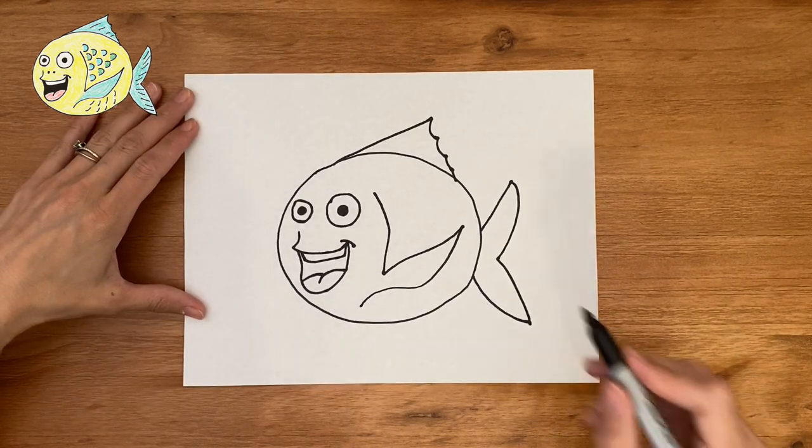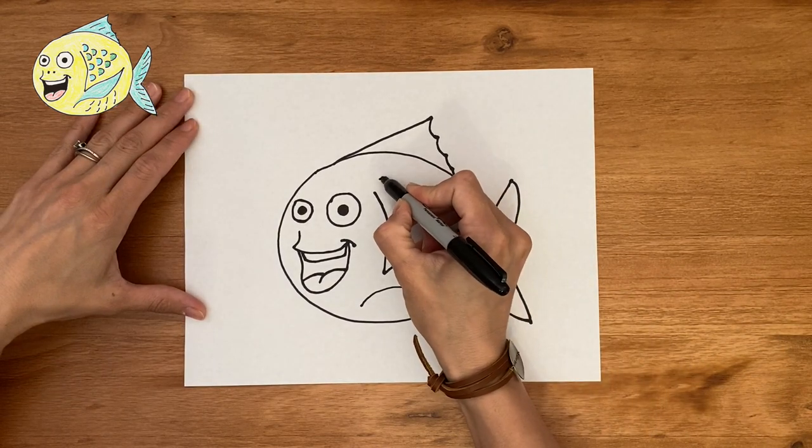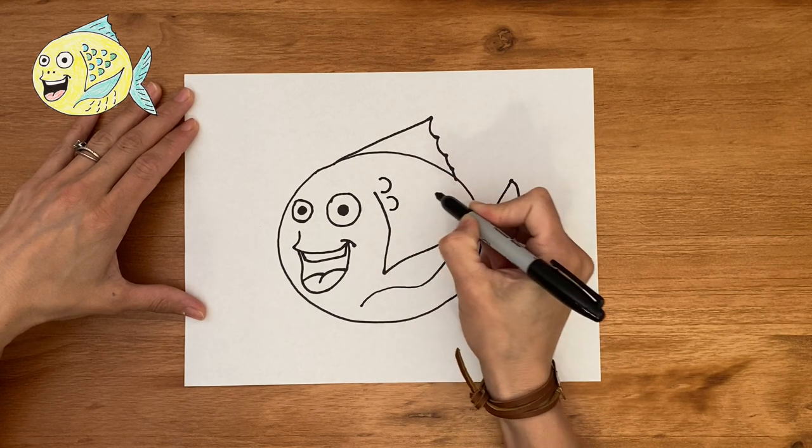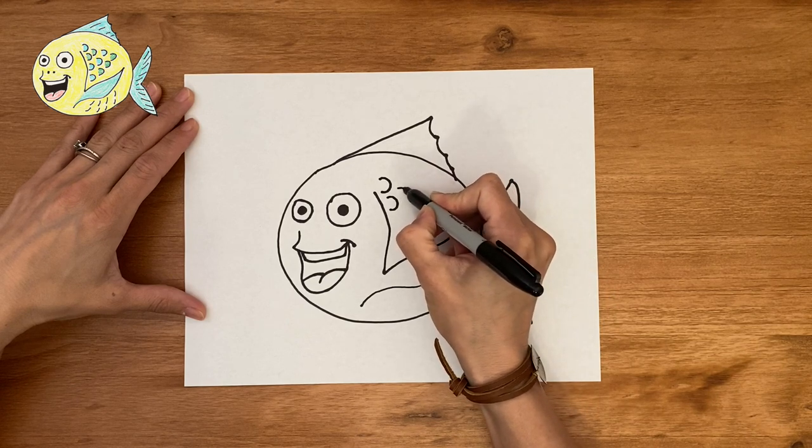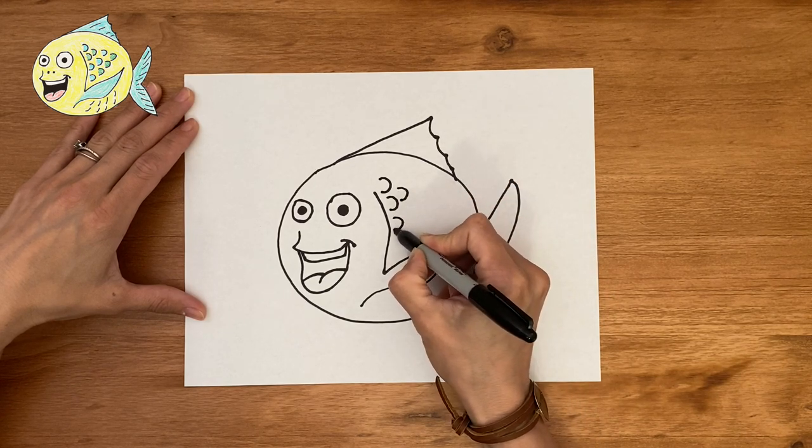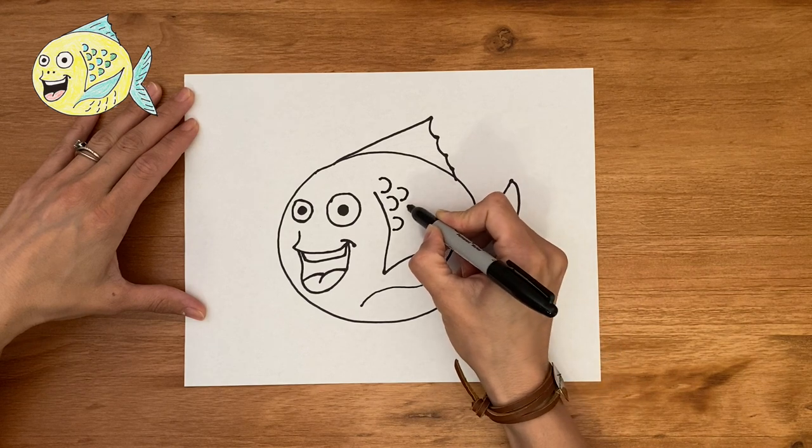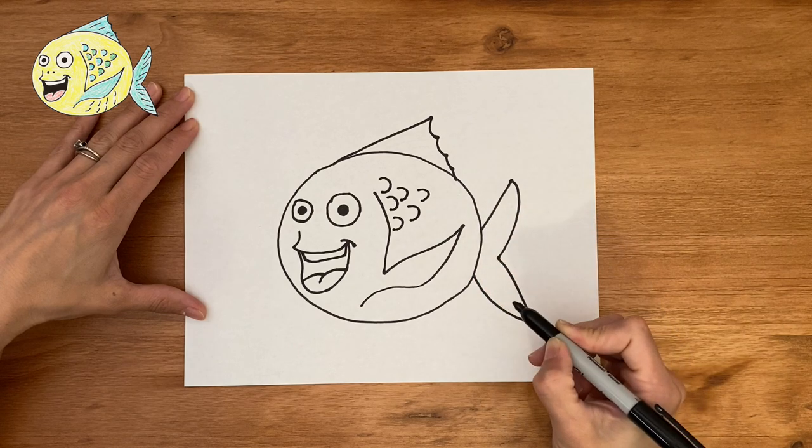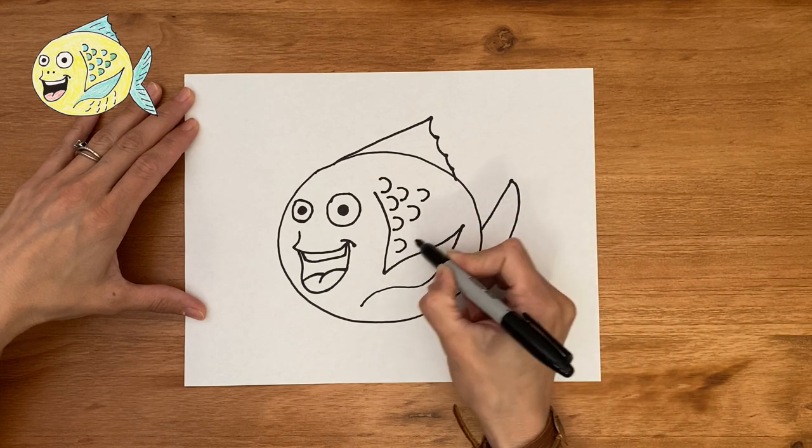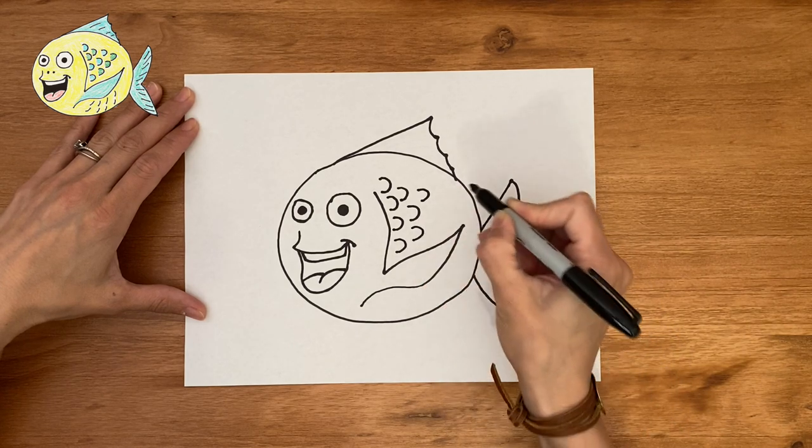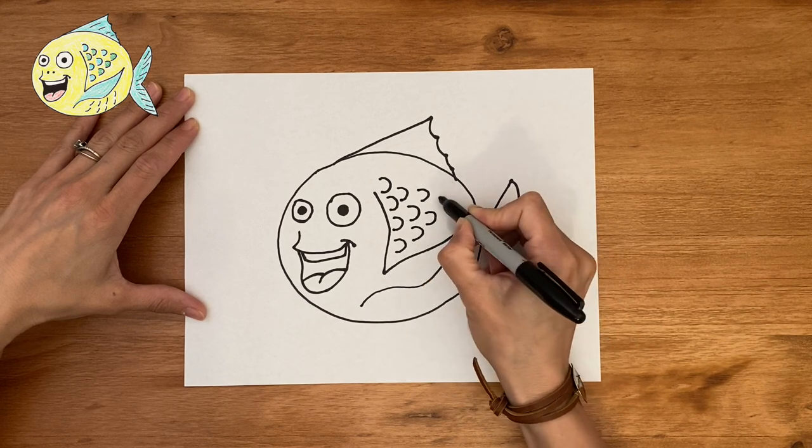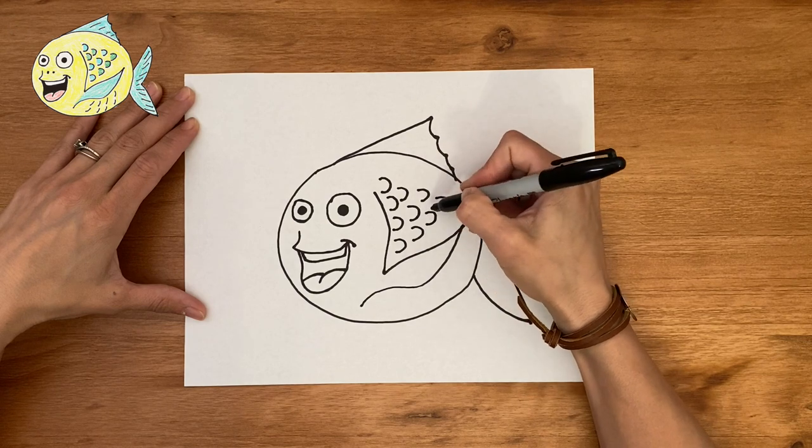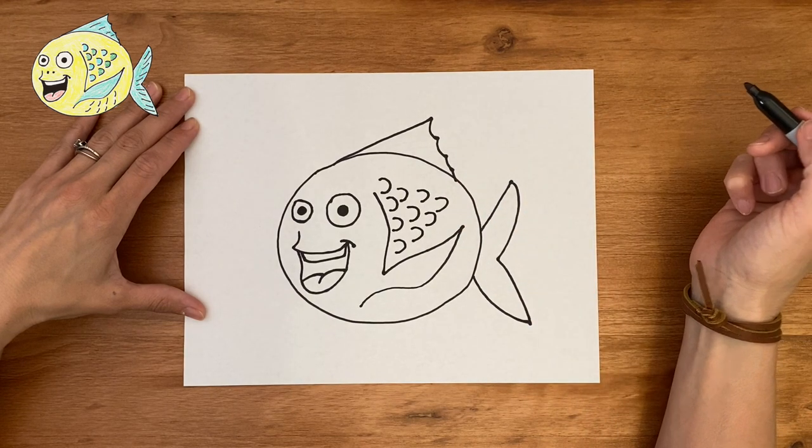Now we're going to start by adding some detail. I'm going to start the scales. So these are kind of like backward C's. It's the best description I think I have for them. So just put a few backward C's right at this top portion. Going to add a few more, just kind of fill out this white space. Nice. So I did four, three, two, and one if you want to follow my pattern.